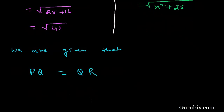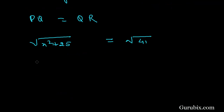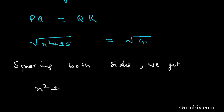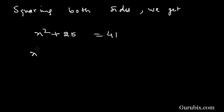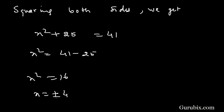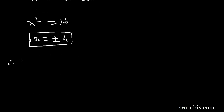We are given that PQ equals QR. Therefore √(x² + 25) = √41. Squaring both sides, we get x² + 25 = 41, so x² = 41 - 25 = 16, which means x = ±4.